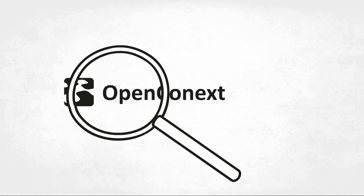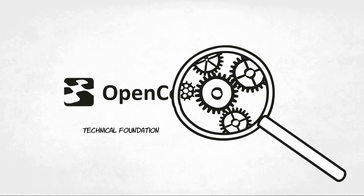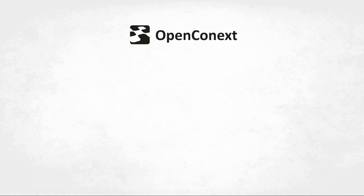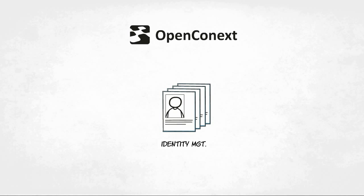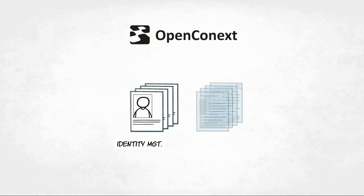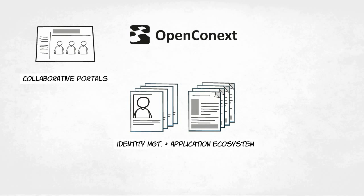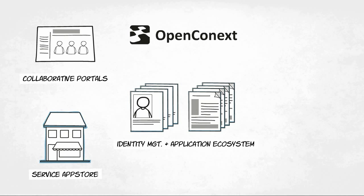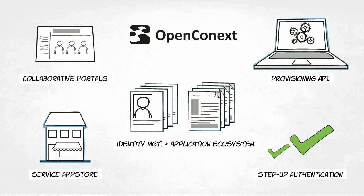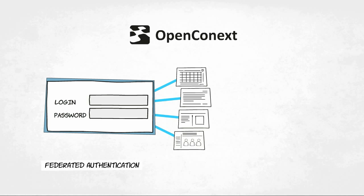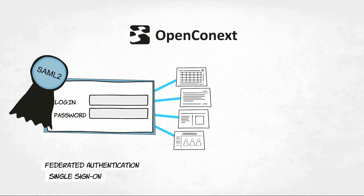As these organizations have discovered, OpenConnext's technical foundation is both flexible and built to be reused. At OpenConnext's core is identity and group management. It has an application ecosystem that includes collaborative portals, a service app store, a provisioning API and step-up authentication. It boasts federated authentication and single sign-on functionalities based on SAML 2.